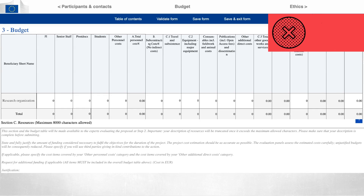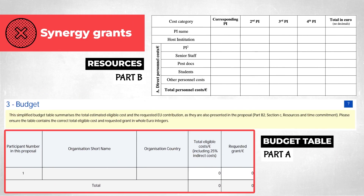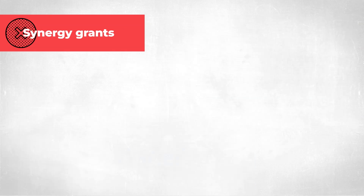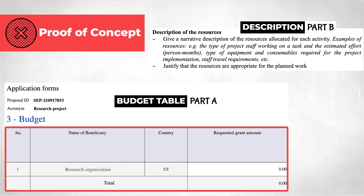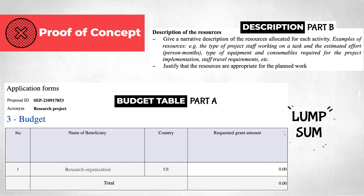An exception applies to synergy grants, where the simplified budget table summarizes detailed budgets of individual principal investigators presented in part B2 of the project proposal, and proof of concept grants, where the budget table is simplified due to the use of a lump sum. Always check the current ERC work program as the ERC intends to extend lump sum funding to other schemes.